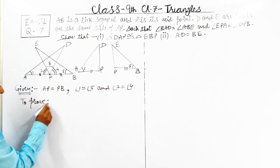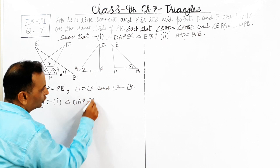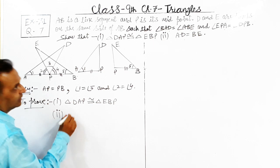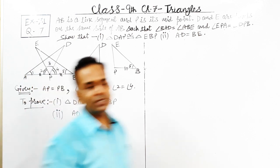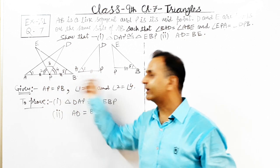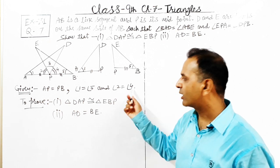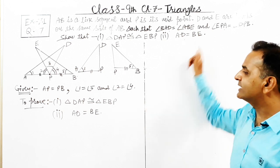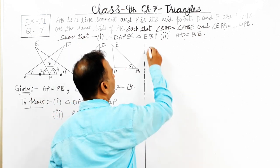It is given directly. So write down: part one — triangle DAP congruent to triangle EBP; part two — side AD equals to side BE. So in the Given: AP and PB are equal because P is the midpoint of AB; angle one equals to angle five — given; angle two and four are equal — also given. To Prove is the same: triangle DAP congruent to triangle EBP and AD equals to BE. There is no construction needed, so we move directly to the proof.